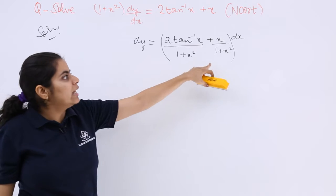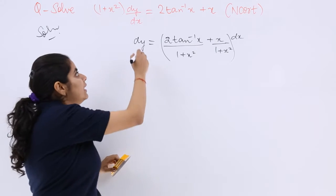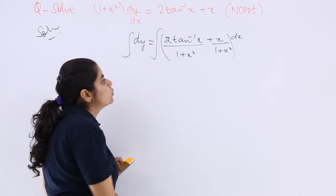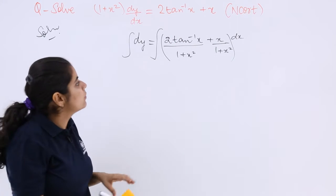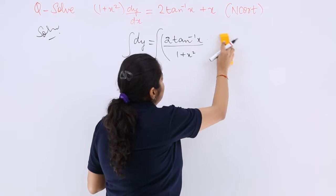Now this is dy and these are all terms in x. Let's integrate both sides for reaching the further part of the solution. 2tan⁻¹x / (1+x²) is there, so dx can be separated with this.